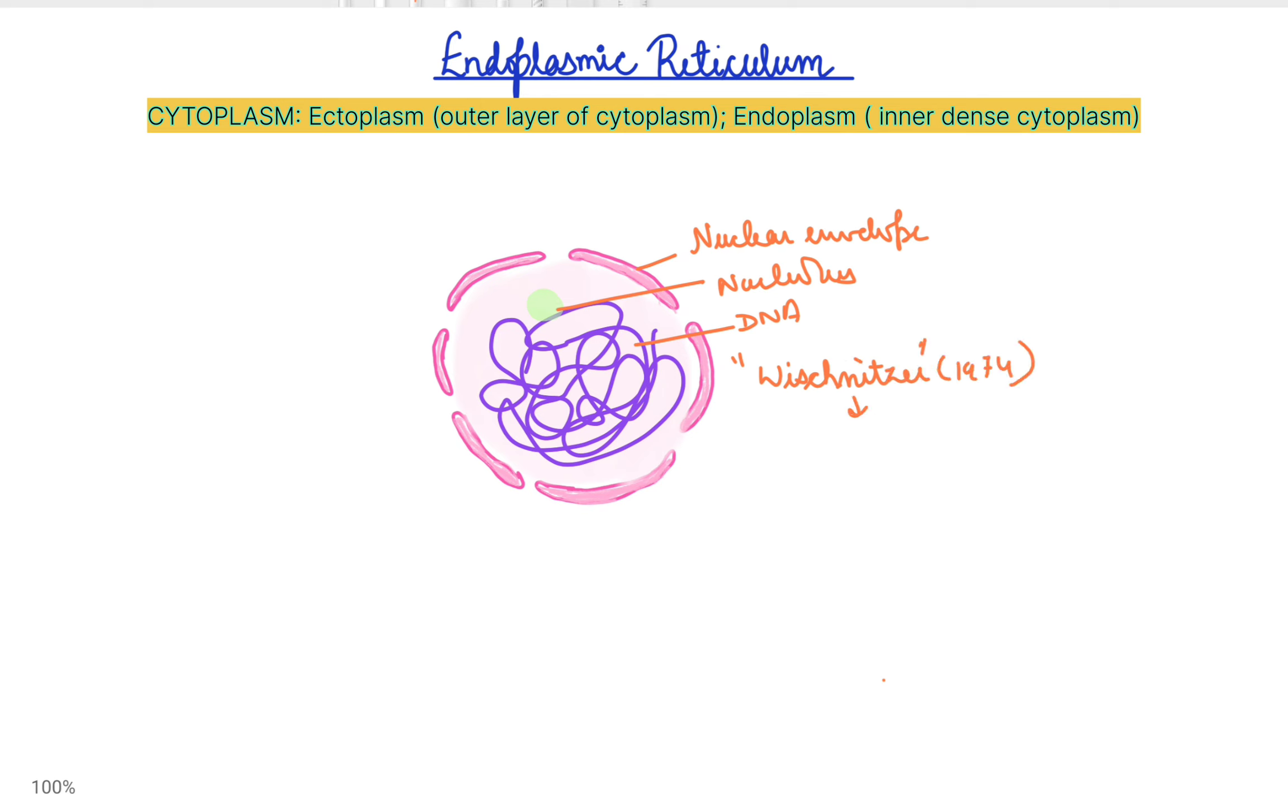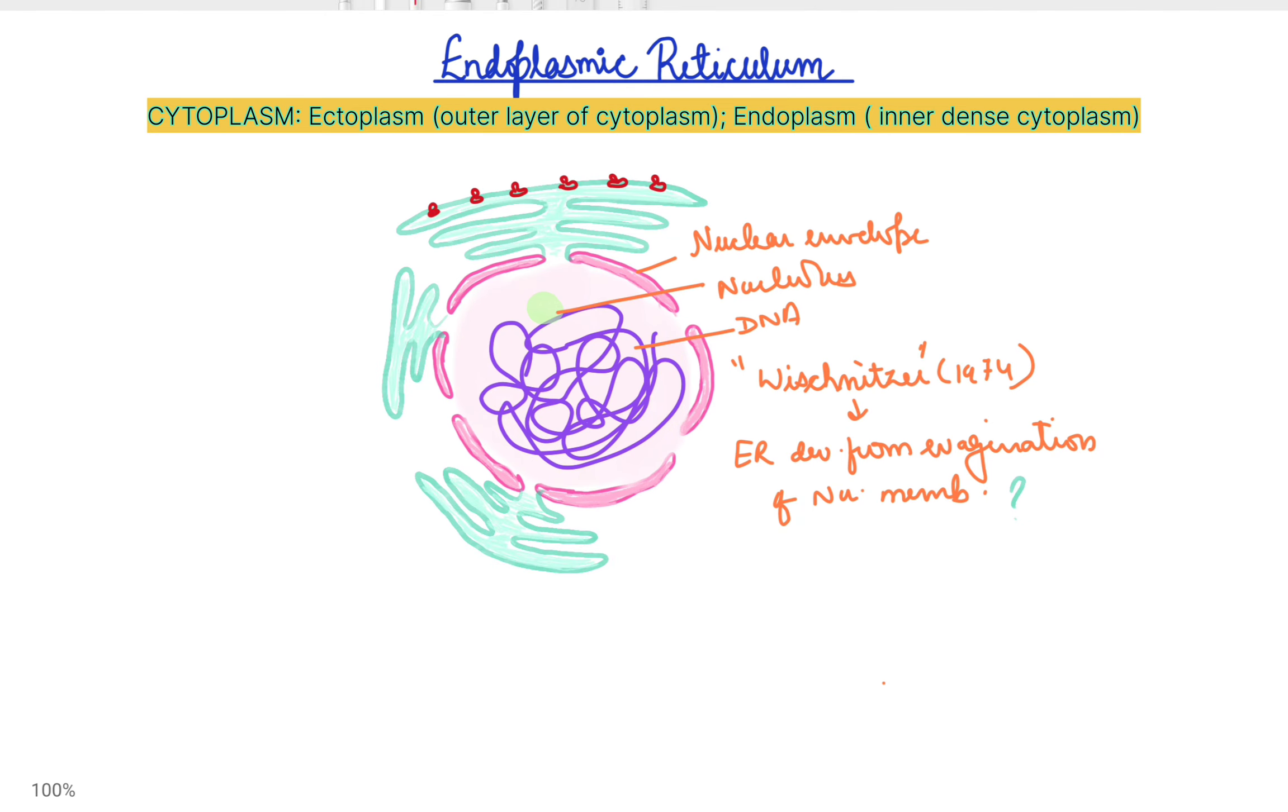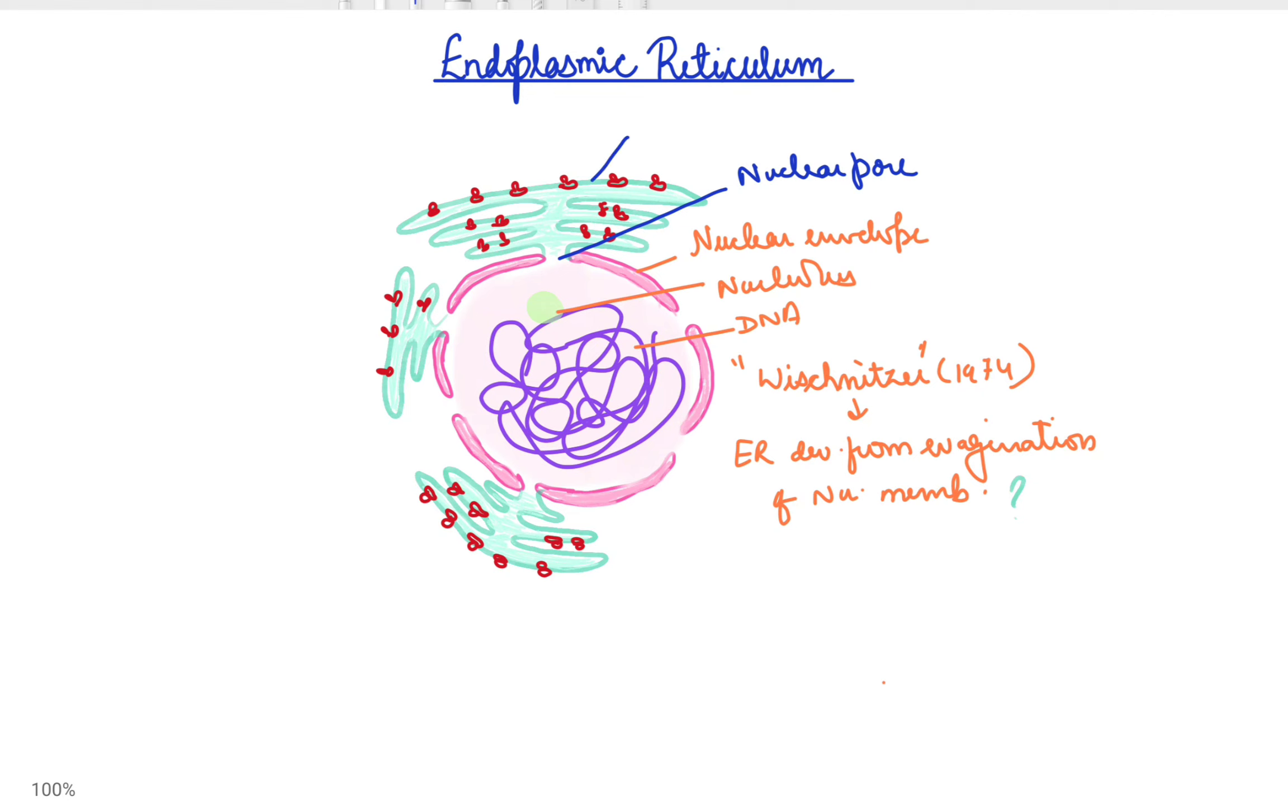Endoplasmic reticulum can be of two types: rough endoplasmic reticulum and smooth endoplasmic reticulum. The rough endoplasmic reticulum is called so because of the presence of ribosomes on its surface. These ribosomes synthesize protein from mRNA.